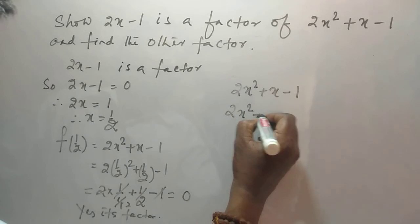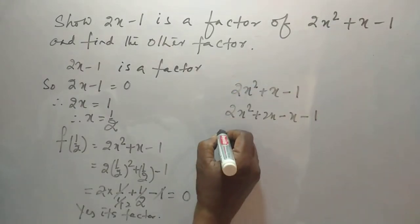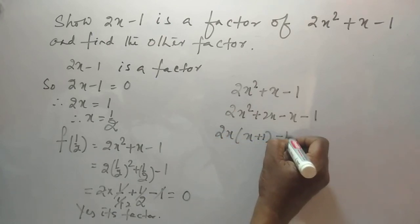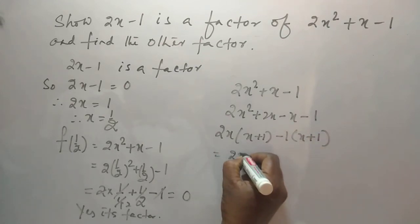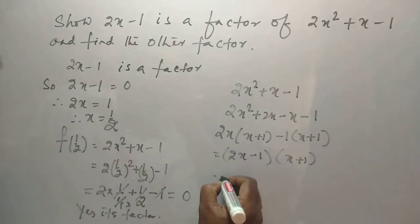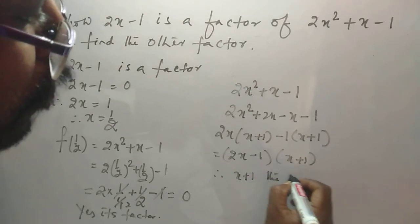this is 2x square plus 2x minus x minus 1. 2x is the common x plus 1 and 1 is the common x plus 1. This is 2x minus 1 is a factor and other is x plus 1. The other factor is x plus 1.